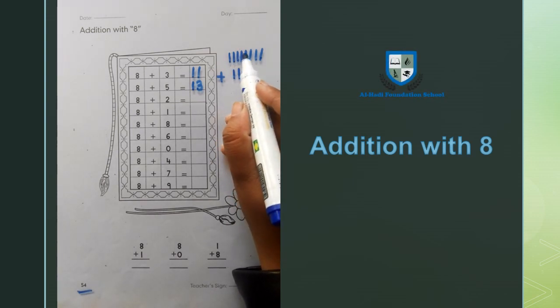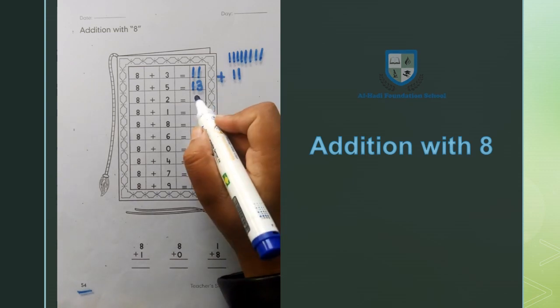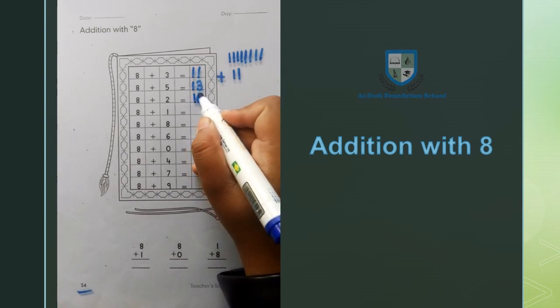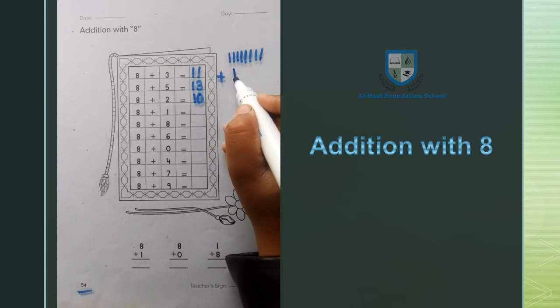Next number is 8 plus 2. Now we will add 8 lines. So we will start the number 8, 9, 10. 8 plus 2 equals 10. Next number is 8 plus 1 equals 9.